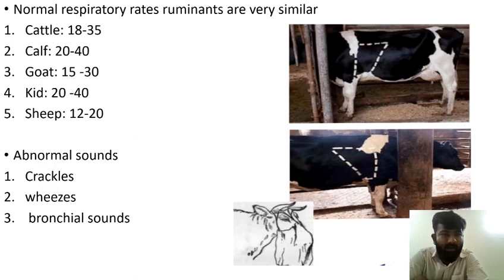Normal respiratory rates in ruminants are very similar. Cattle: 18 to 35. Calf: 20 to 40. Goat: 15 to 30. Kid: 20 to 40. Sheep: 12 to 20.